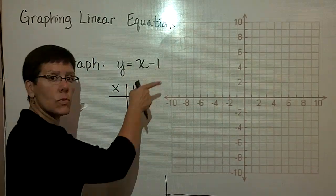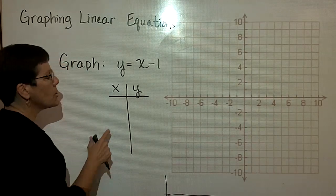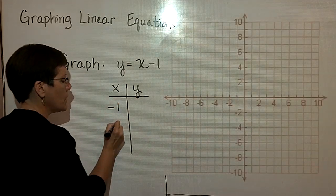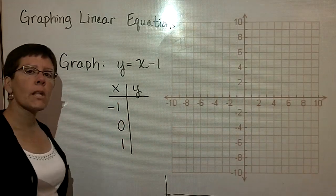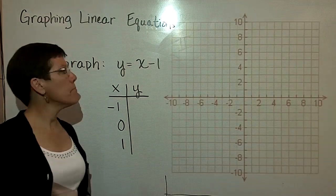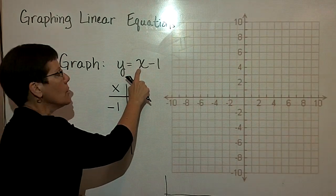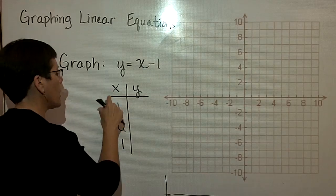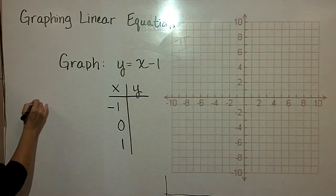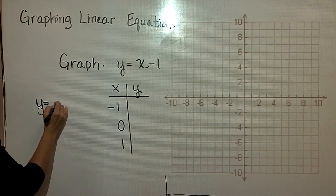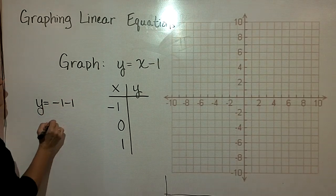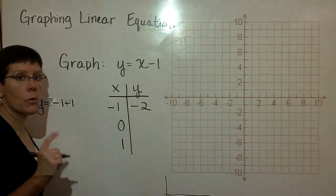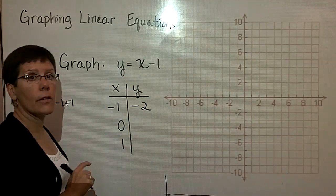I'm going to graph y equals x minus 1, and I'm going to pick three values for x. I think I'll use negative 1, 0, and 1. I'll put each of those values in, one at a time, right here in this equation for x. My first time, I'd like to put in a negative 1 for x and then subtract 1. So I have y equals negative 1 minus 1, or plus a negative 1, and that adds to be a negative 2.